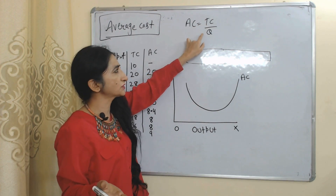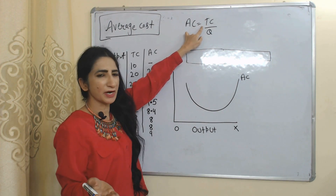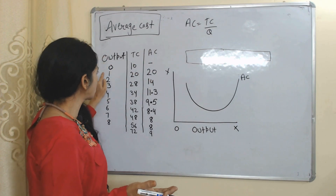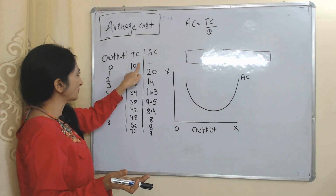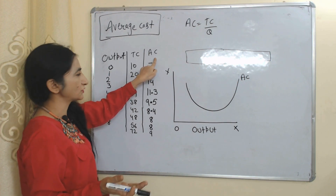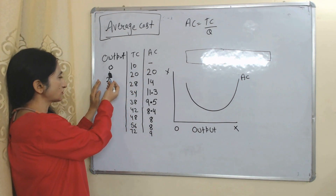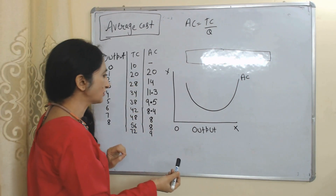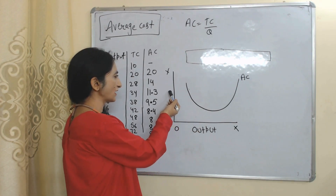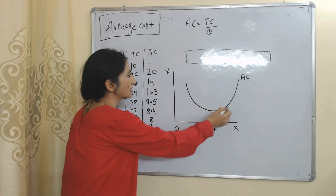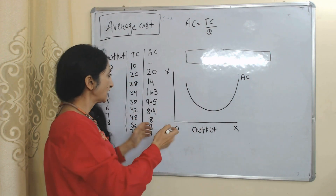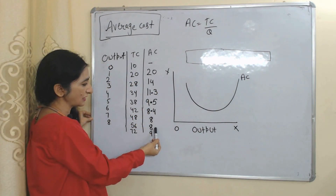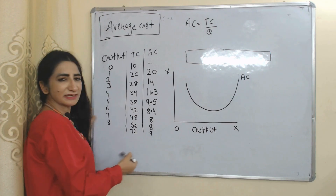We calculate average cost by dividing total cost by output — TC divided by Q equals average cost. In the table: the first column has output, the second has total cost, and the third has average cost. When we divide total cost by output we get average cost. In the diagram, on the x-axis we have output and on the y-axis we have average cost. Initially average cost is reducing, but after a certain time period it becomes constant and then starts increasing.